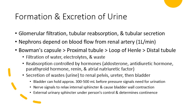Normal formation and excretion of urine occurs through glomerular filtration, tubular reabsorption, and tubular secretion. The nephrons depend on blood flow from the renal artery and cycle through about one liter of blood per minute. The Bowman's capsule is where most filtration occurs, followed by the proximal tubule, loop of Henle, and distal tubules. Filtration of water, electrolytes, and waste occurs here, regulated by hormones: aldosterone, antidiuretic hormone, parathyroid hormone, renin, and atrial natriuretic factor.